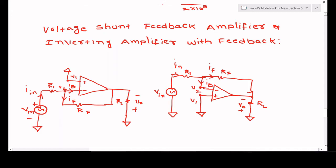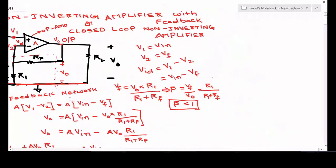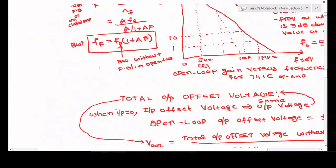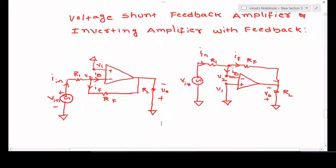Here, the external input voltage is applied to the inverting terminal of the op-amp and the feedback voltage is given in shunt with respect to the input voltage. In the voltage series configuration, the feedback voltage is given in series with the input voltage. In the present inverting amplifier configuration, the feedback voltage is given in shunt — that is why it is called a voltage shunt feedback amplifier.